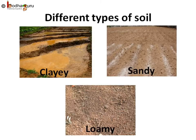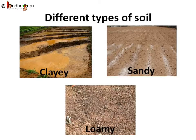We now know that the fertility of soil depends on the proportion of large particles and small particles in the soil. Based on this proportion, the soil can be divided into three types: clayey soil, which has a higher proportion of clay; sandy soil, which has a higher proportion of sand; and the third is the fertile loamy soil, in which the amount of large and small particles is almost the same.